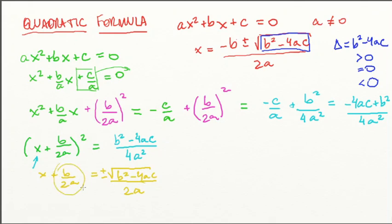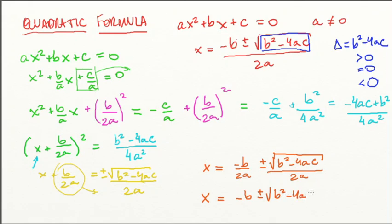Now simply, we want to get this b/2a to the other side because we want to make x our subject. So x = -b/2a ± √(b² - 4ac)/2a. And that is our quadratic formula and we'll be using it.